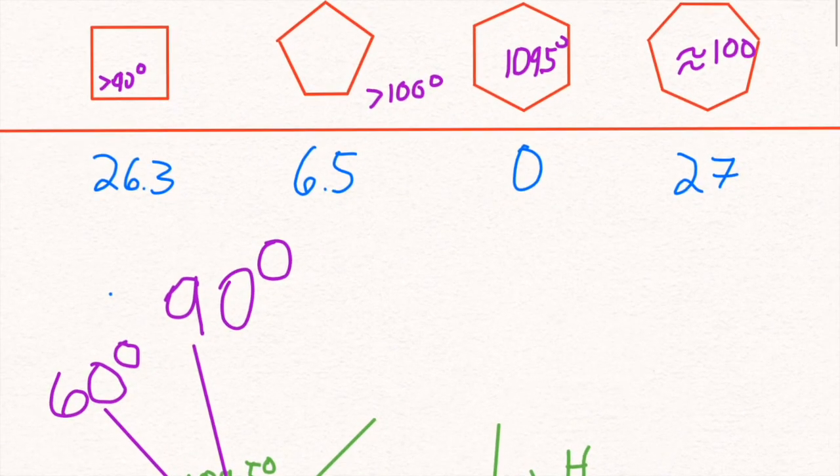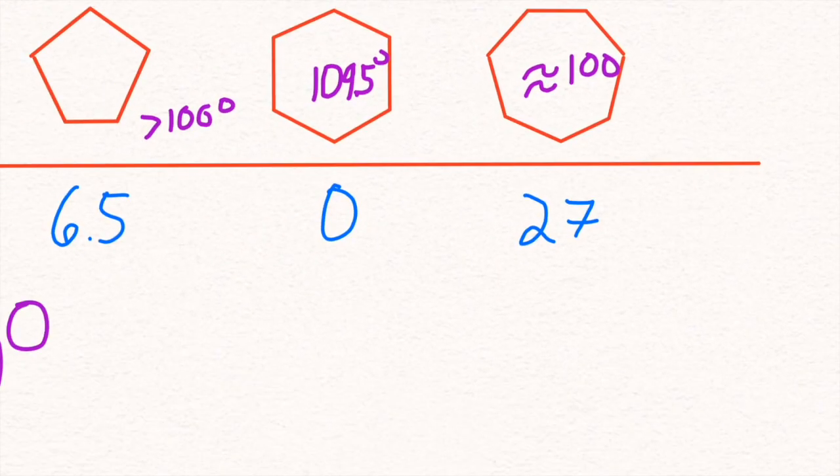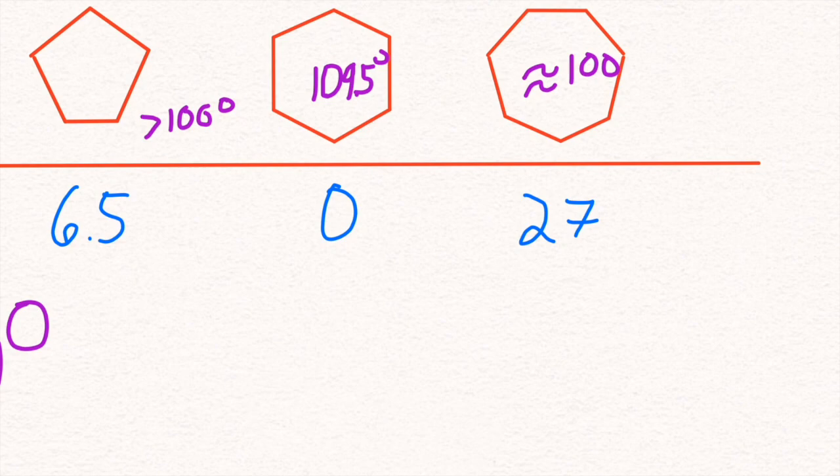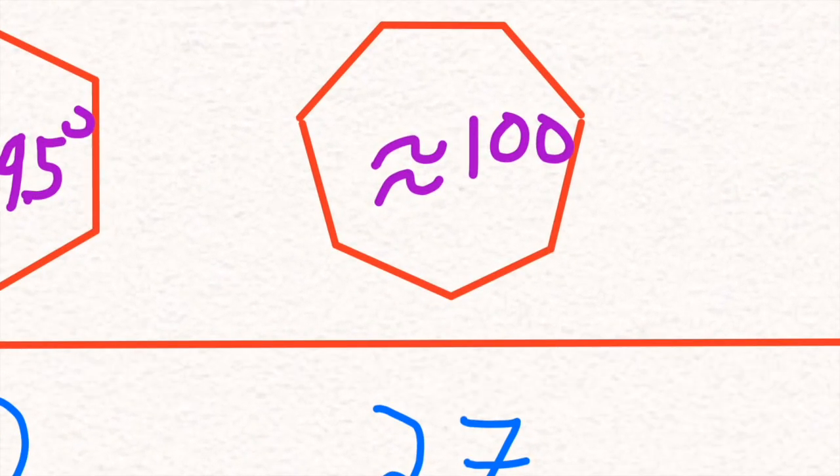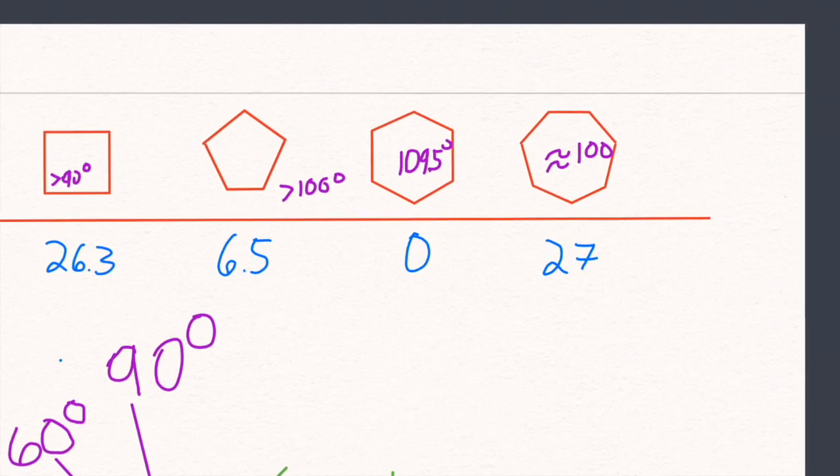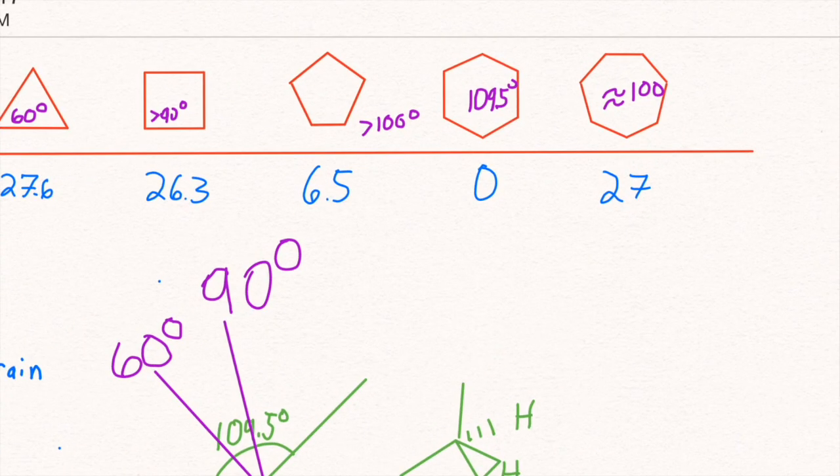The funny thing happens when we add another carbon to it. We go back to having a ton of ring strain because this extra carbon actually destroys our angle, and it can't twist as perfectly as the cyclohexane can. Now we're back to about 100 degrees, making it slightly more unstable than cyclobutane.